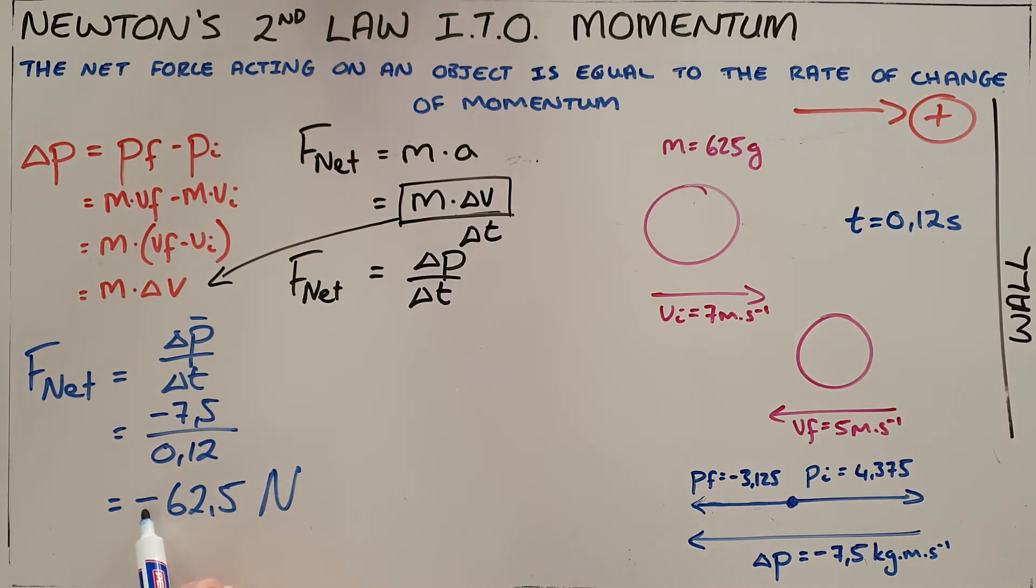Once again, our negative sign here tells us that the force is acting in the opposite direction, the force is acting to the left. So we can rewrite that, or we should rewrite it, in the positive form of 62.5 newtons to the left.